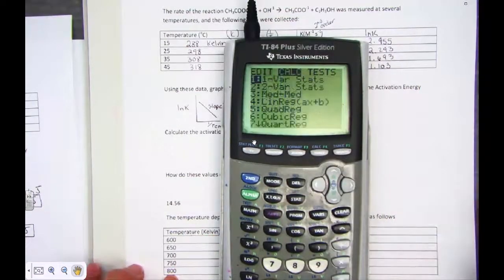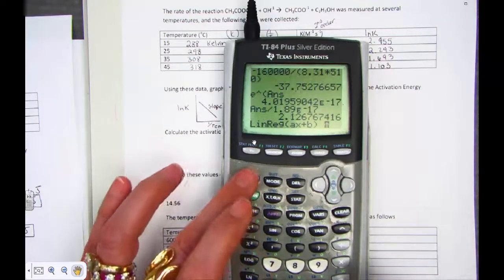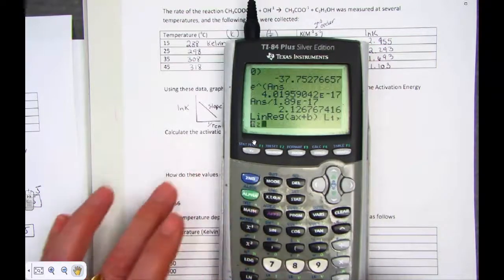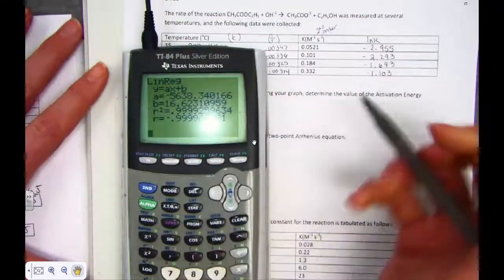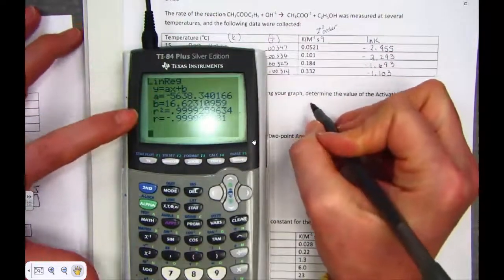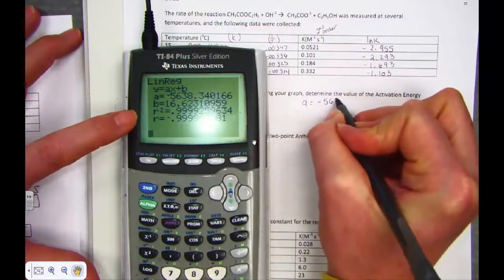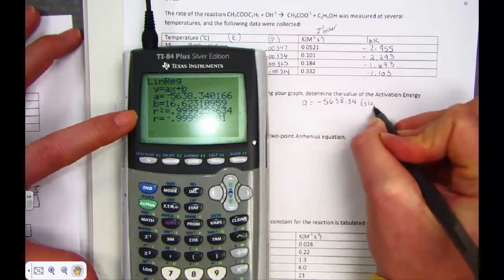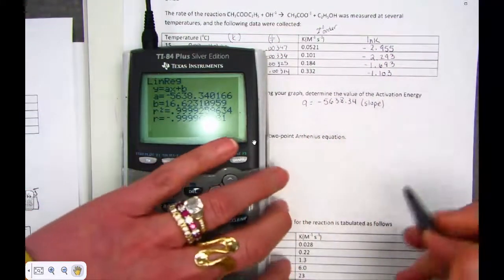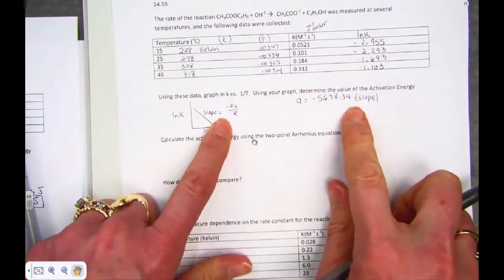Stat key, calculate, a linear regression, choice four. I have my list in list one, comma, list two. And we get this diagnostic screen. For y equals Ax plus B, A is equal to negative 5638.34. That's the slope of our line. That's the piece of information we need to calculate the activation energy.